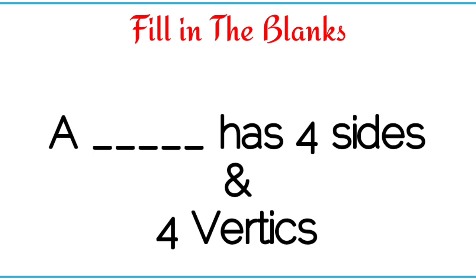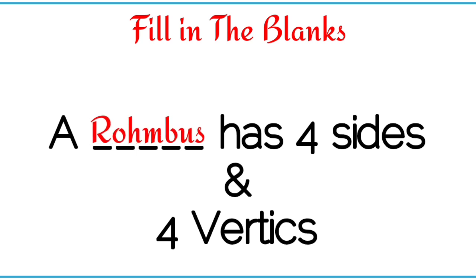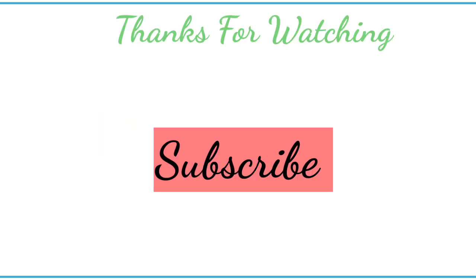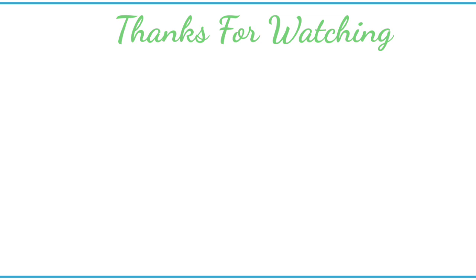Our dash has 4 sides and 4 vertices. Our rhombus has 4 sides and 4 vertices. Thanks for watching. Please don't forget to subscribe to our channel. Bye-bye.